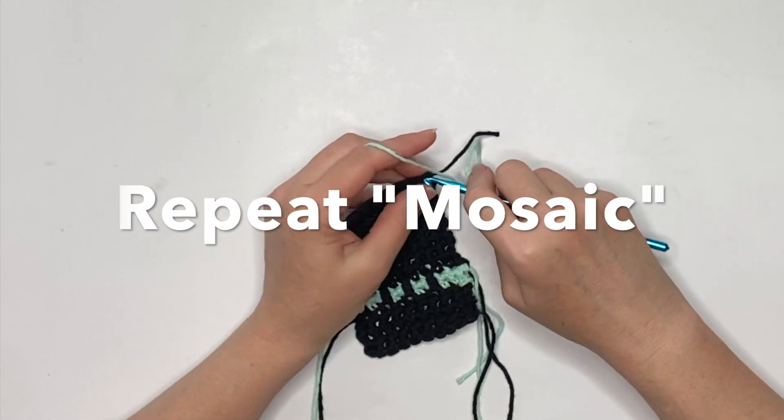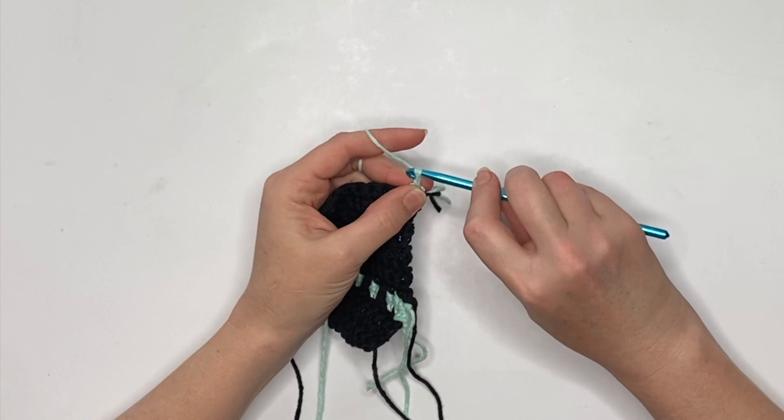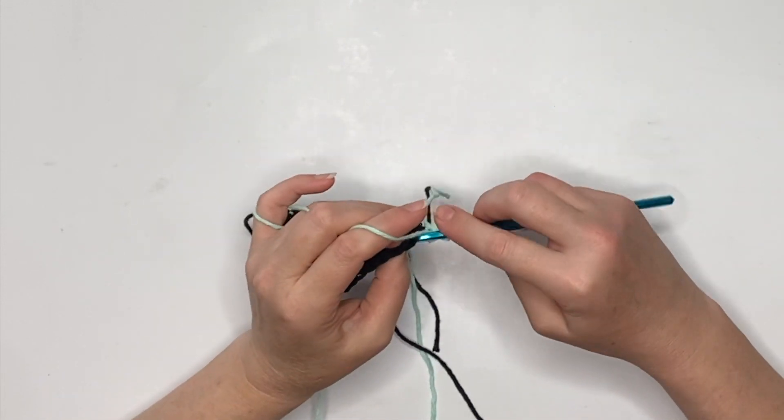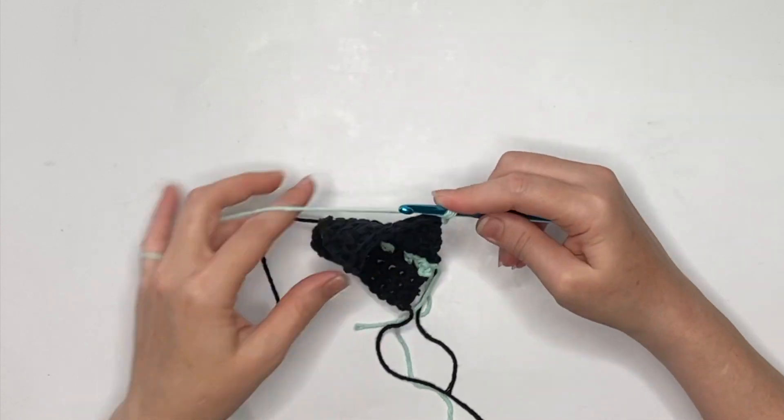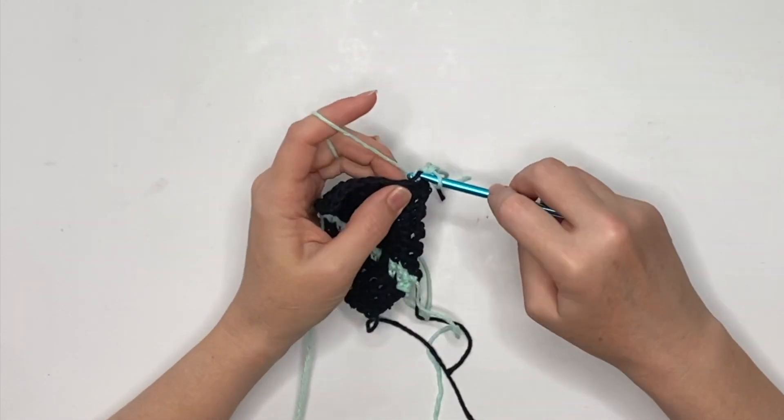Now we're just going to repeat our mosaic section by switching to that color B, going through and doing the single crochet back loop only and making that section so that we can then cover it up with our little mosaic in just a moment.